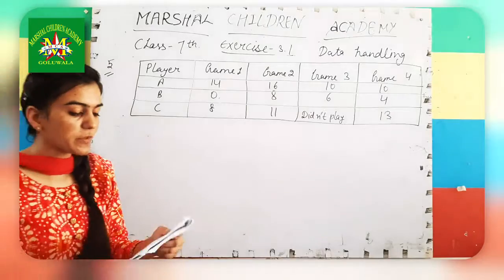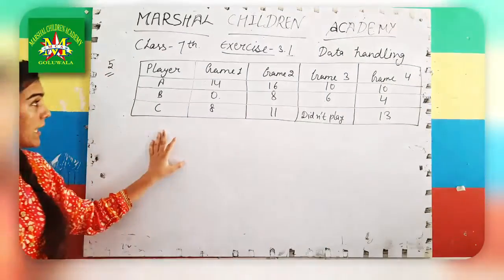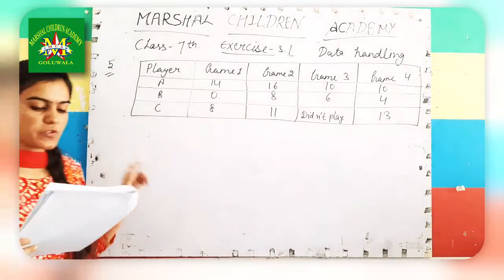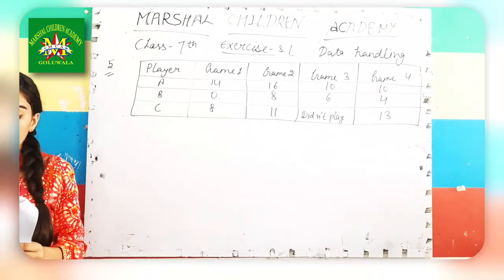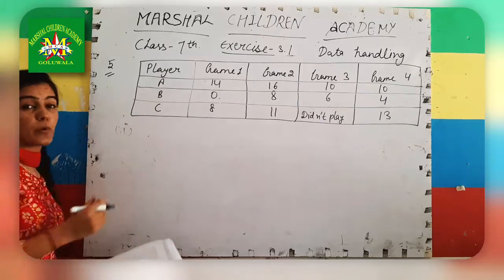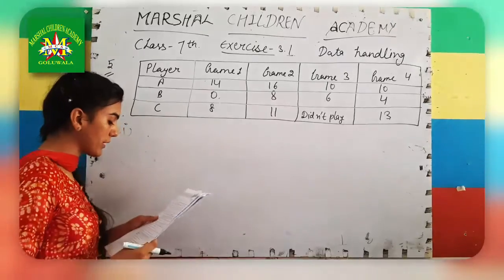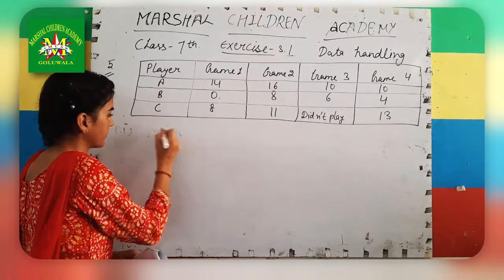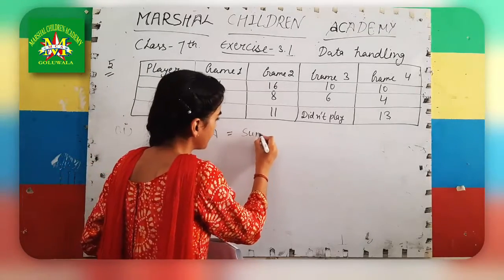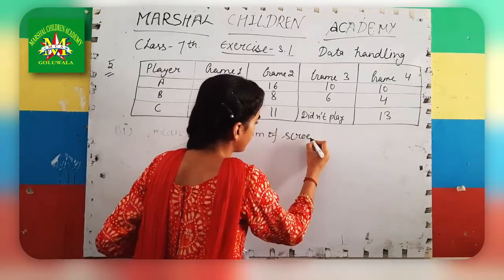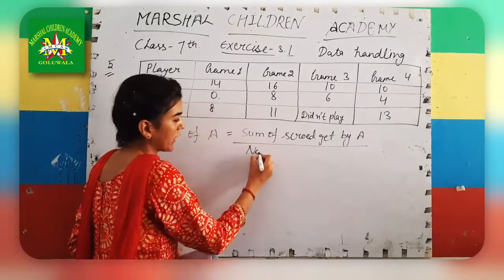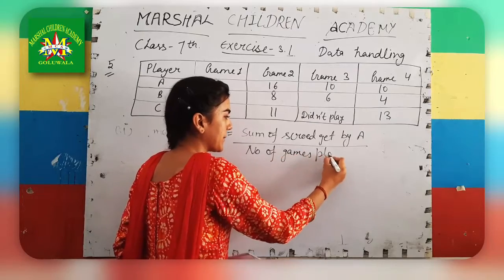Firstly, question 5 shows a table with 3 players. Find the mean to determine A's average number of points scored per game. The mean formula I have already told you. Mean of A equals sum of scores of A divided by number of games played by A.